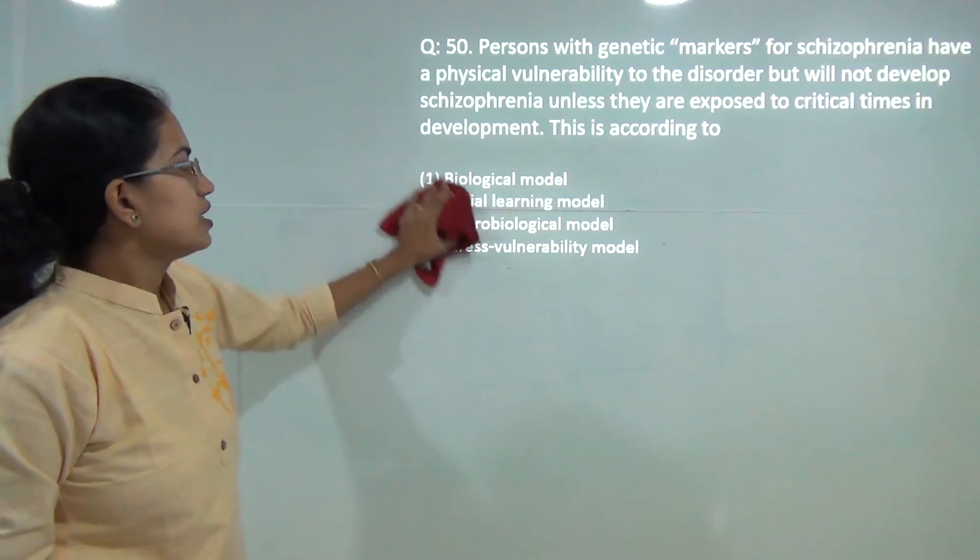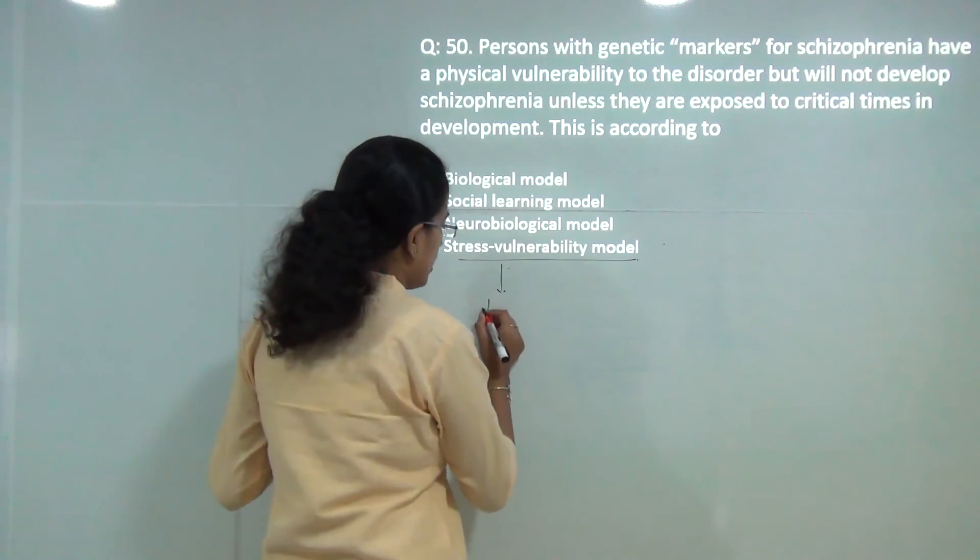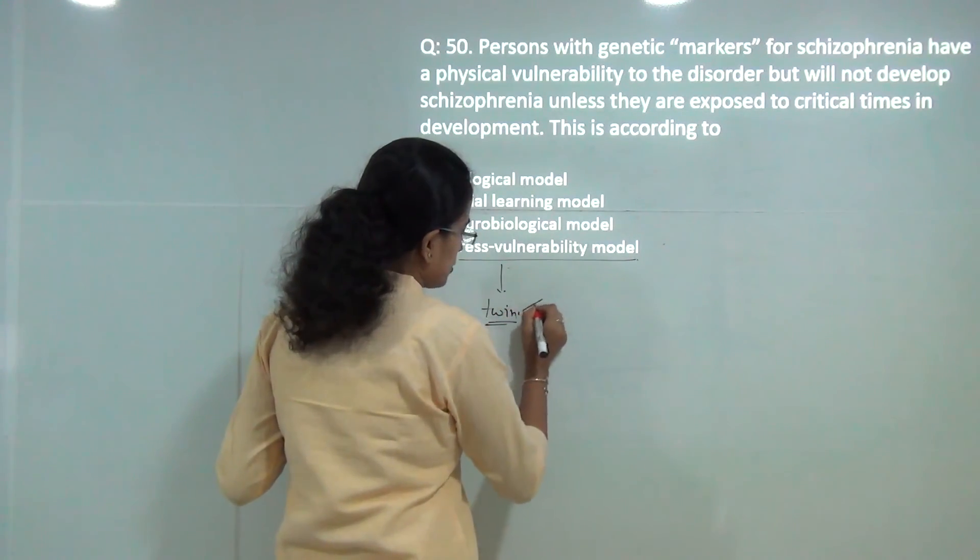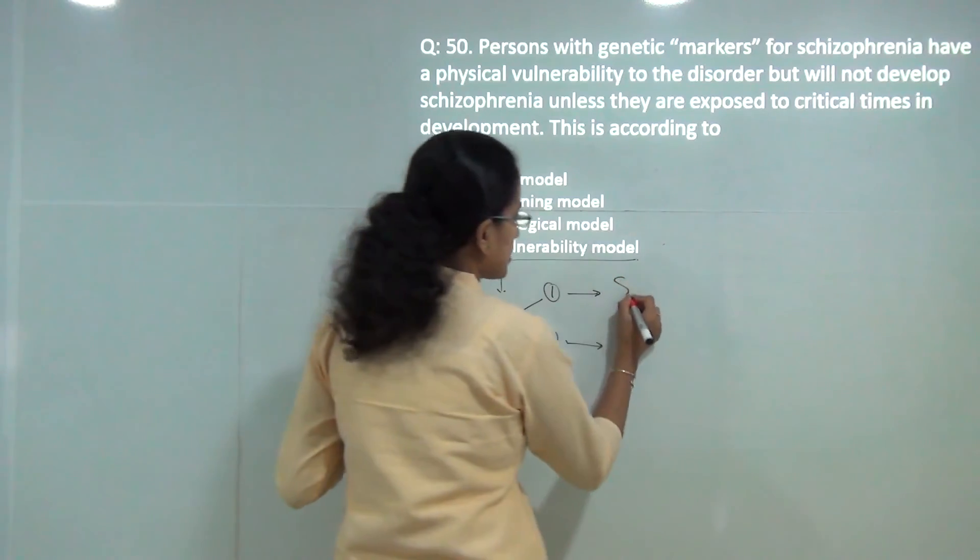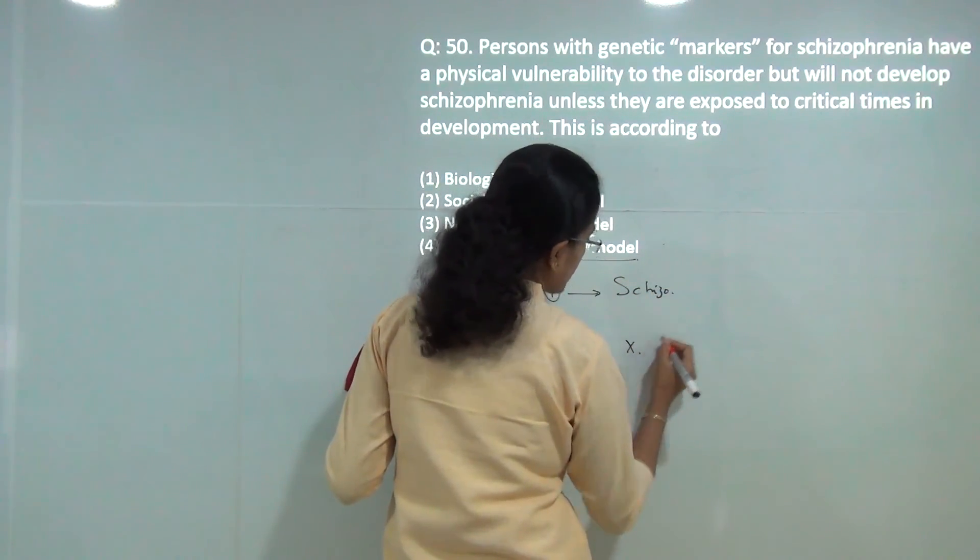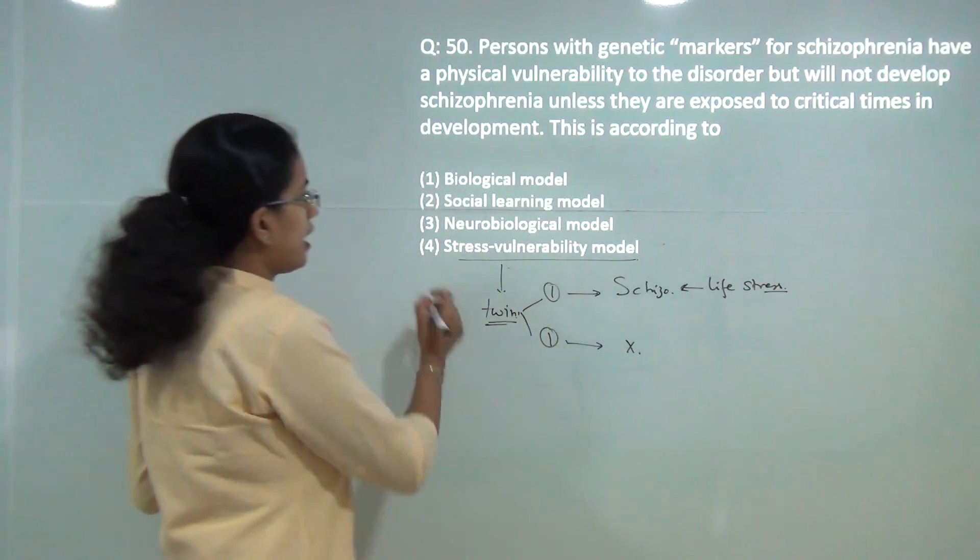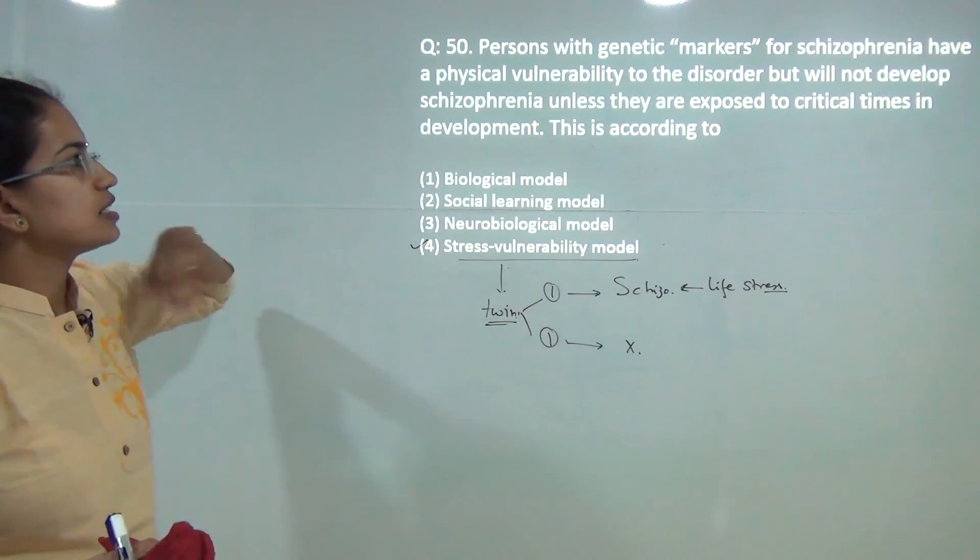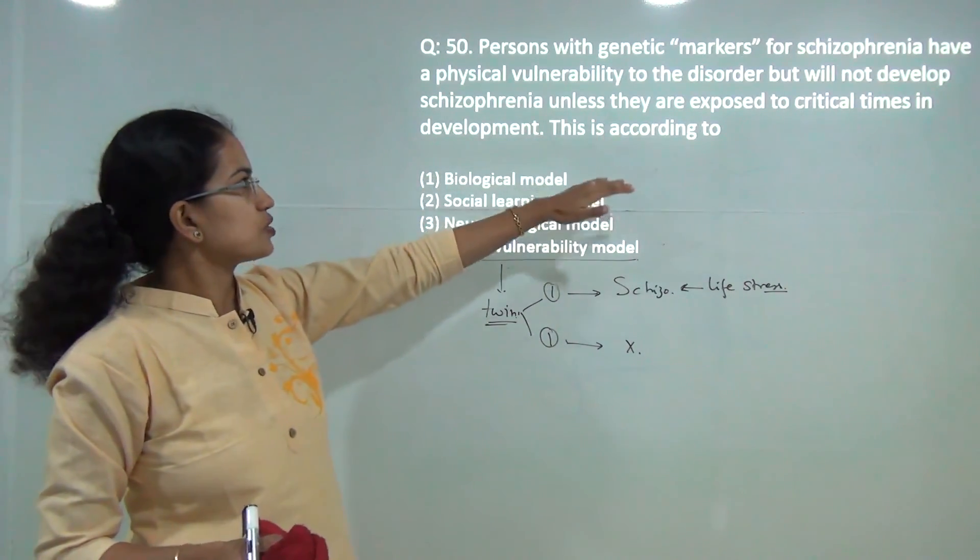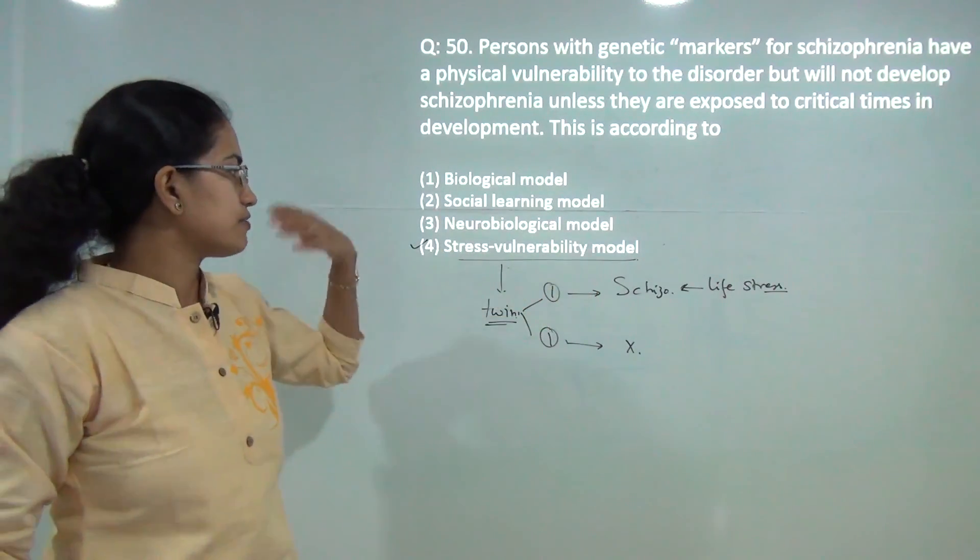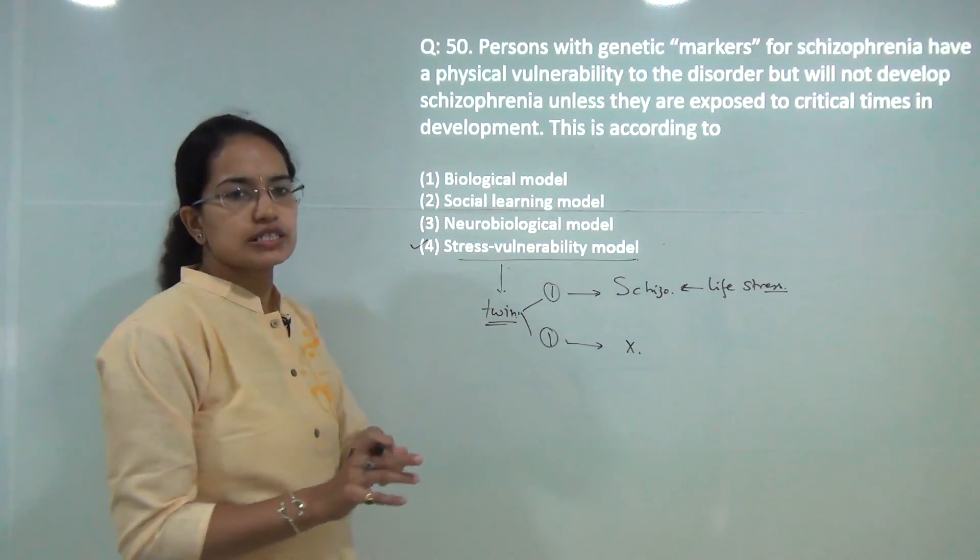Last question: this is the stress vulnerability model. This model suggests that if you have twin children who are studied, one would develop schizophrenia, the other will not, and this would depend on the life stress that affects the individual. You have this concept that was given with the genetic markers have a tendency for physical vulnerability, but unless they are exposed to critical types, that would not pop out or that would not be visible. So that is what was studied under the stress vulnerability model. Four is the correct answer for this question.